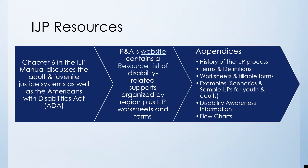P&A has created a variety of resources regarding the IJP process. P&A's website has a comprehensive IJP manual with several chapters to help understand the process and how to write an IJP. Appendices include the history of the IJP process, terms and definitions, worksheets and fillable forms, examples and scenarios showing what a completed IJP looks like, information regarding disability awareness, and flow charts regarding the adult and juvenile justice systems.